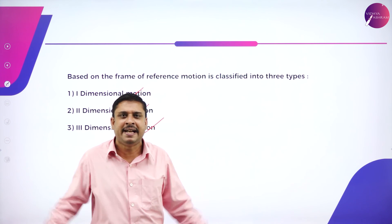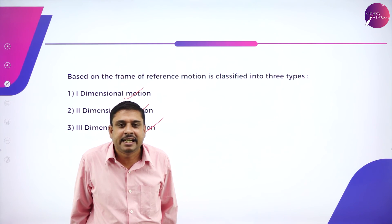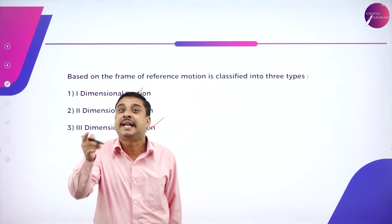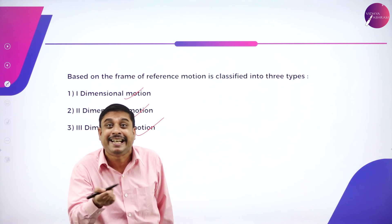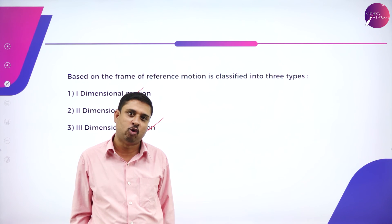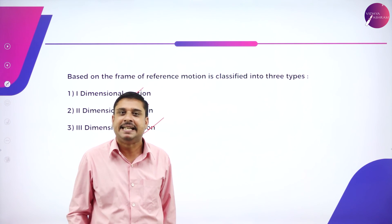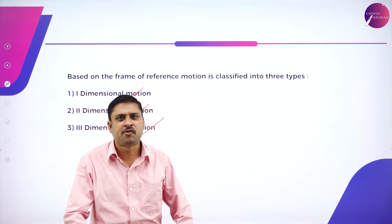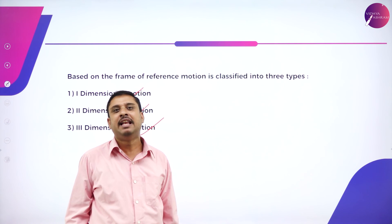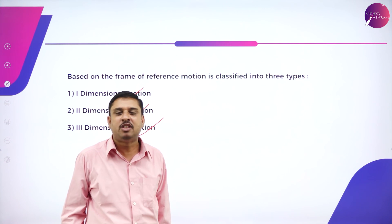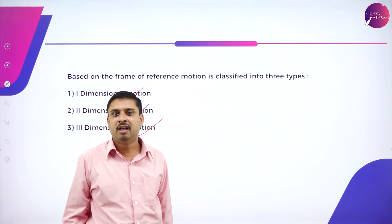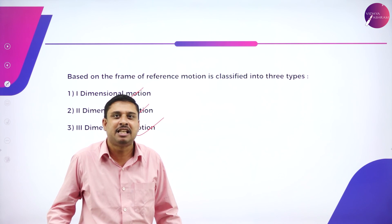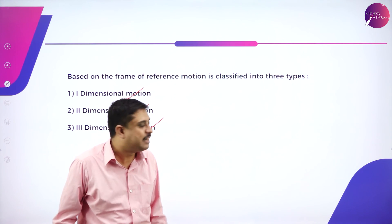So, what did we learn today? Motion is a continuous change in position of a body with respect to time. Kinematics describes only the consequences of motion, not the cause. Kinetics describes both cause and consequences. A body is at rest when it is in the same position for all intervals of time. Three types of motion: one-dimensional, two-dimensional, three-dimensional — classification based on frame of reference. Stay curious, and thank you!